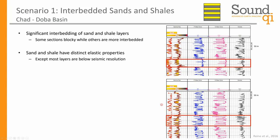The first example is from the Dova Basin in Chad, where we have a number of highly interbedded sands and shales in the reservoir section. You can see over in the two examples I've given, our logs all tend to go from sand to shale to sand to shale back and forth. We have some sections that are blockier — more continuous reservoir — and others that are very highly interbedded. What we want to do from the seismic data is see if we can determine the difference between these different zones and find more of these continuous sand layers.